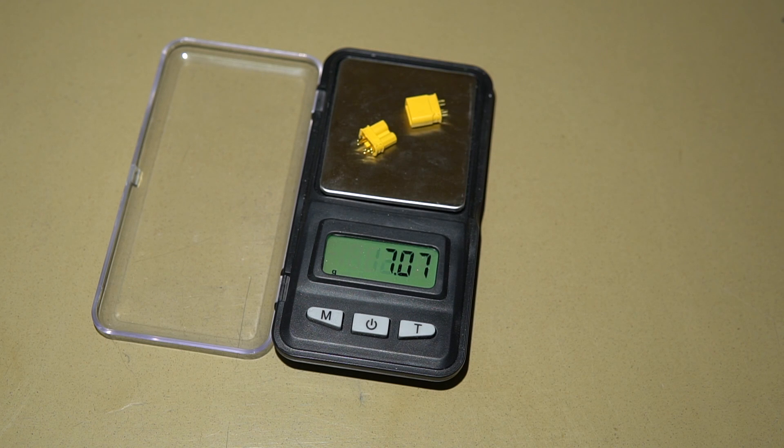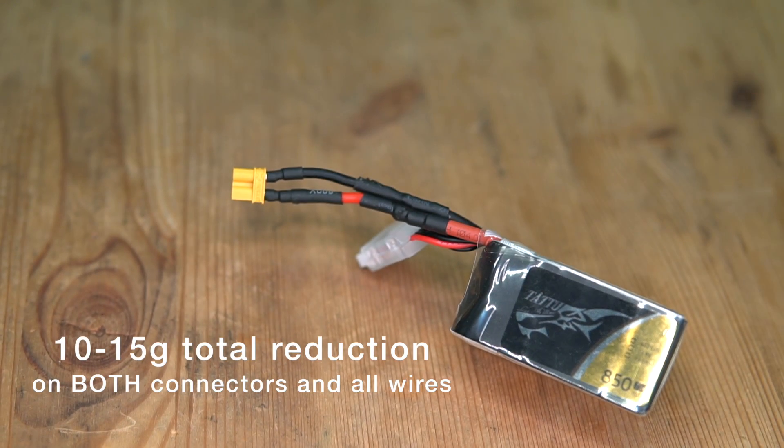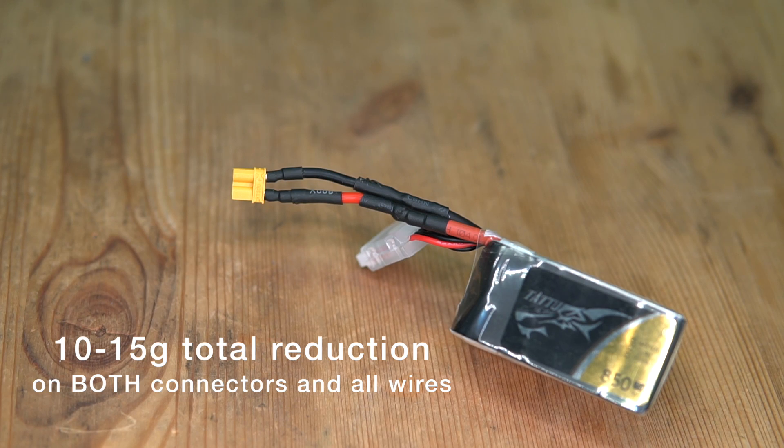Speaking of sizes, at 1.6 grams, the XT30 is much lighter than the XT60, and if you include the weight of the wires, you can save as much as 10 to 15 grams by switching down from a 60 to a 30.